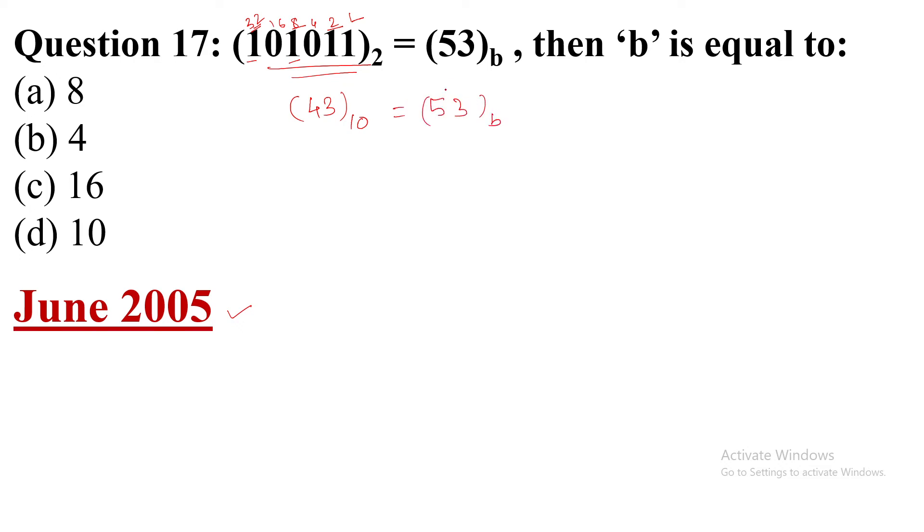Now we will multiply it. Here also we will write the power notations of 0 and 1. Now 43 equals 5 times b to the power 1 plus 3 times b to the power 0. So b to the power 0 is 1.